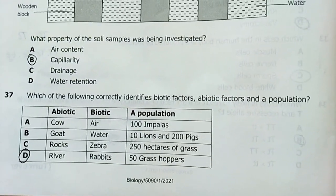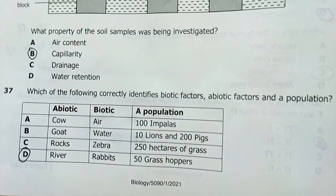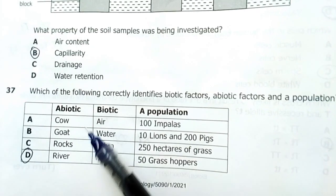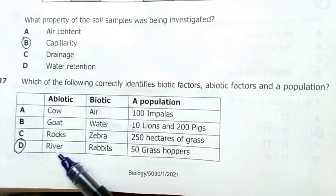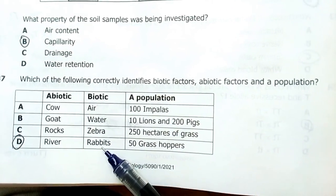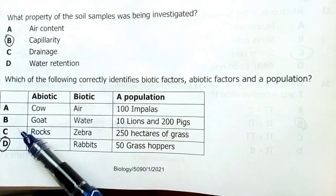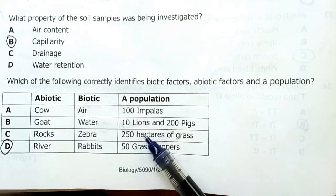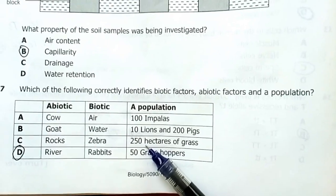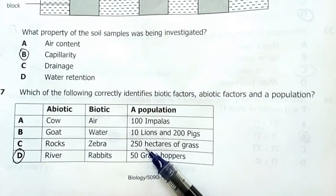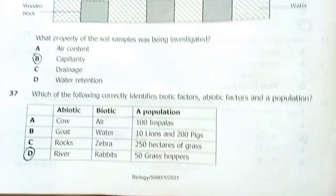Number 37. Which of the following correctly identifies biotic factors, abiotic factors, and population? My answer was D. Biotic factor, abiotic, non-living. River, it's non-living. Biotic, rabbit, yes, it's living. Then population. 50 grasshoppers. Number C may seem a little bit correct as well, but here, it's not telling you about the number of grass plants. It's telling you about the area where the grass is, not the number of grass plants. So, this one falls off. My answer is D.